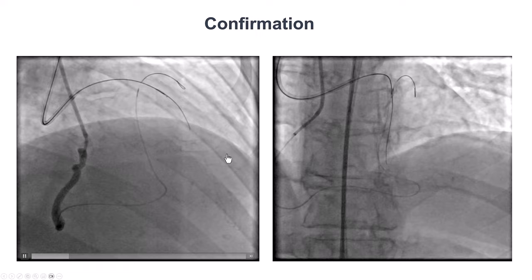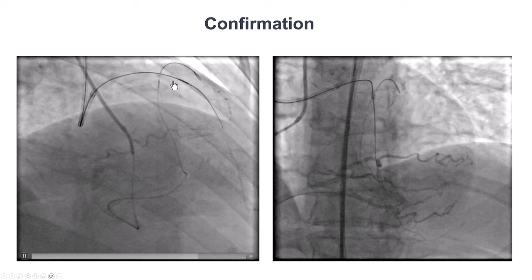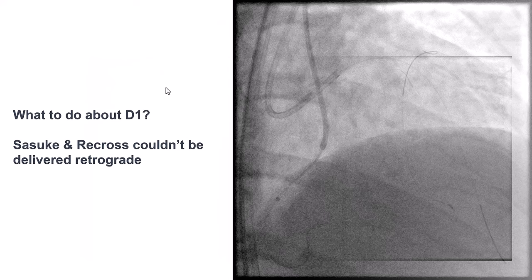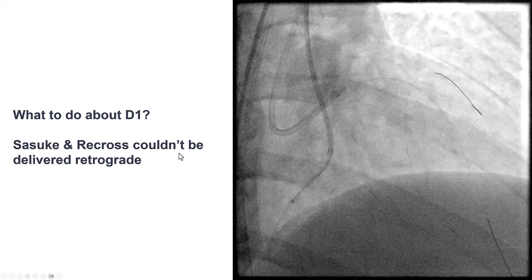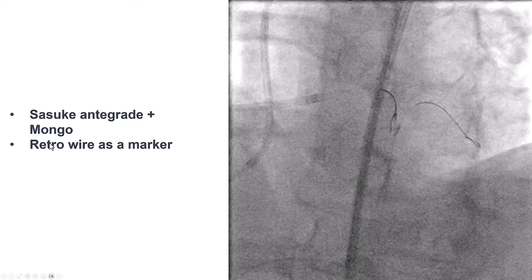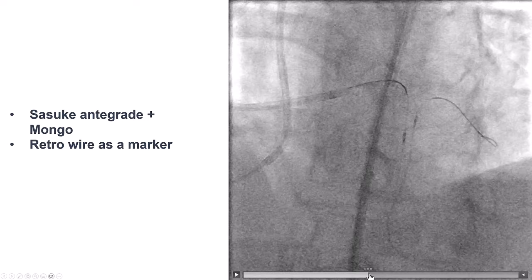This was successful crossing into the distal true lumen. Unfortunately, there was some space between the proximal cap and the re-entry point, and we were concerned about how to enter the diagonal branch. We tried a Sasuke dual-lumen microcatheter — we attempted to go retrograde through it to wire in the other direction — but we were unable to do so. We went back in the antegrade direction using the Sasuke.